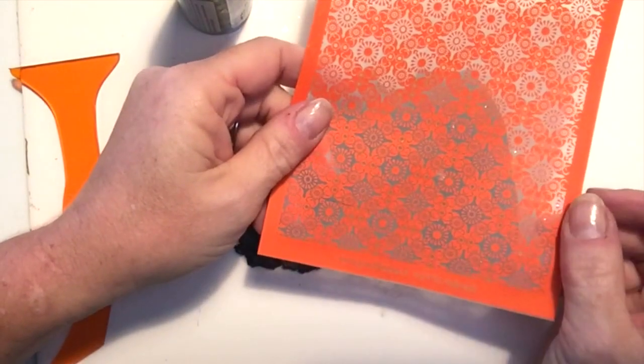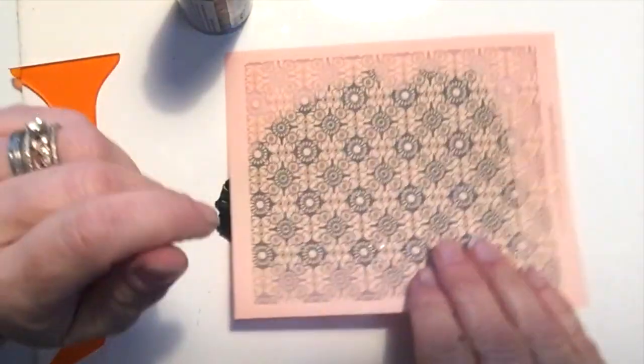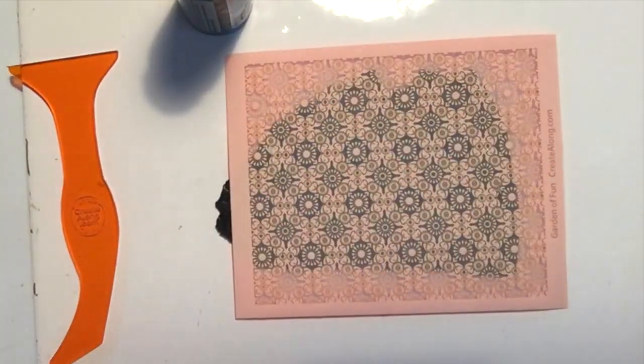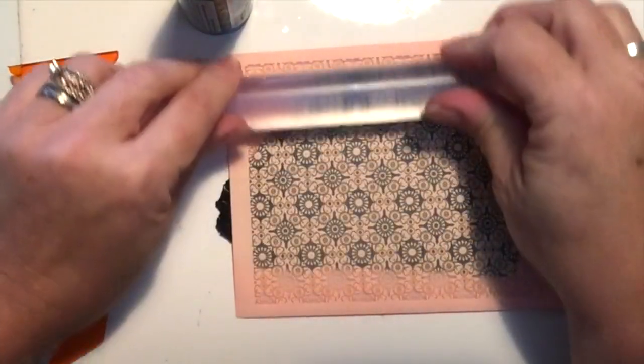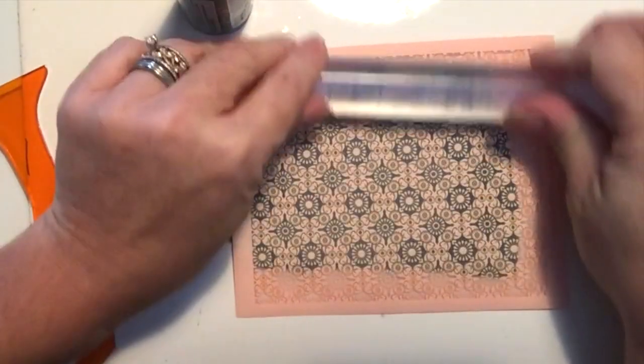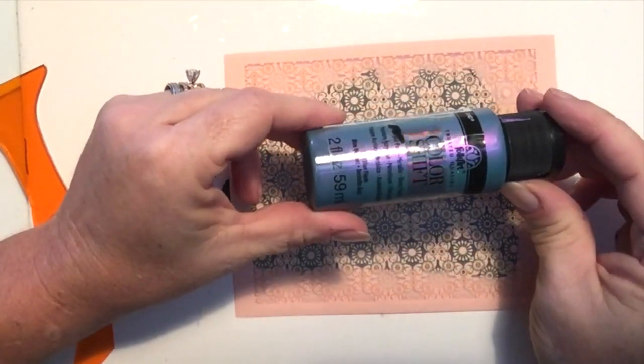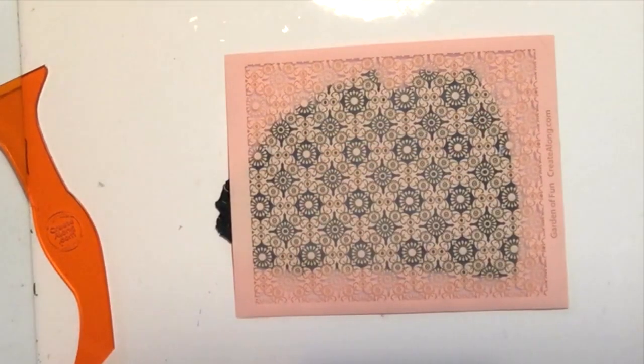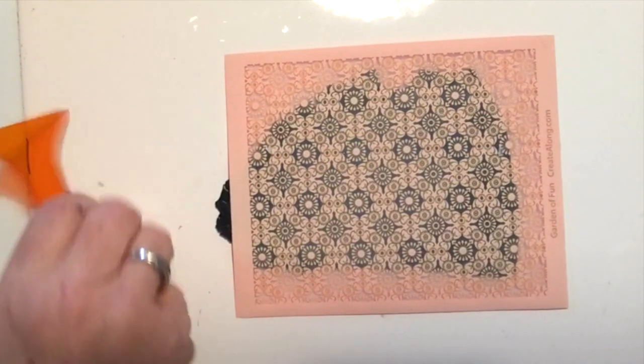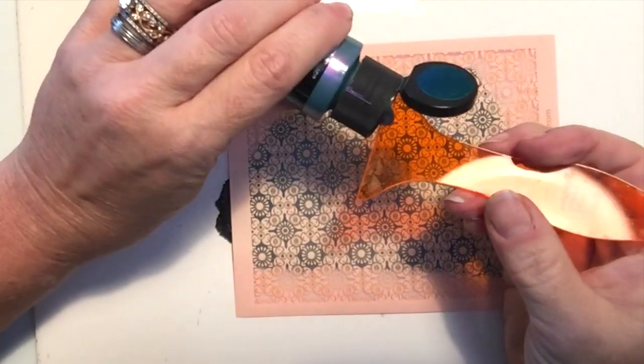I started by conditioning and rolling some black Primo Sculpey to the first setting on my clay machine. I'm going to silkscreen with this gorgeous silkscreen that came with this month's box. It's called Garden of Fun. I like to just roll it a bit to make sure it's in place. And I'm using this plaid folk art color shift paint and this is blue flash.